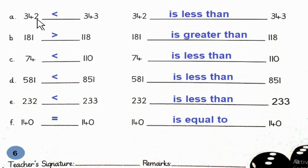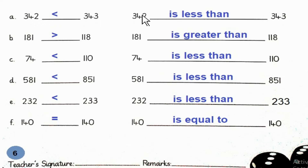A: 342 and 343. So, 342 is less than 343.